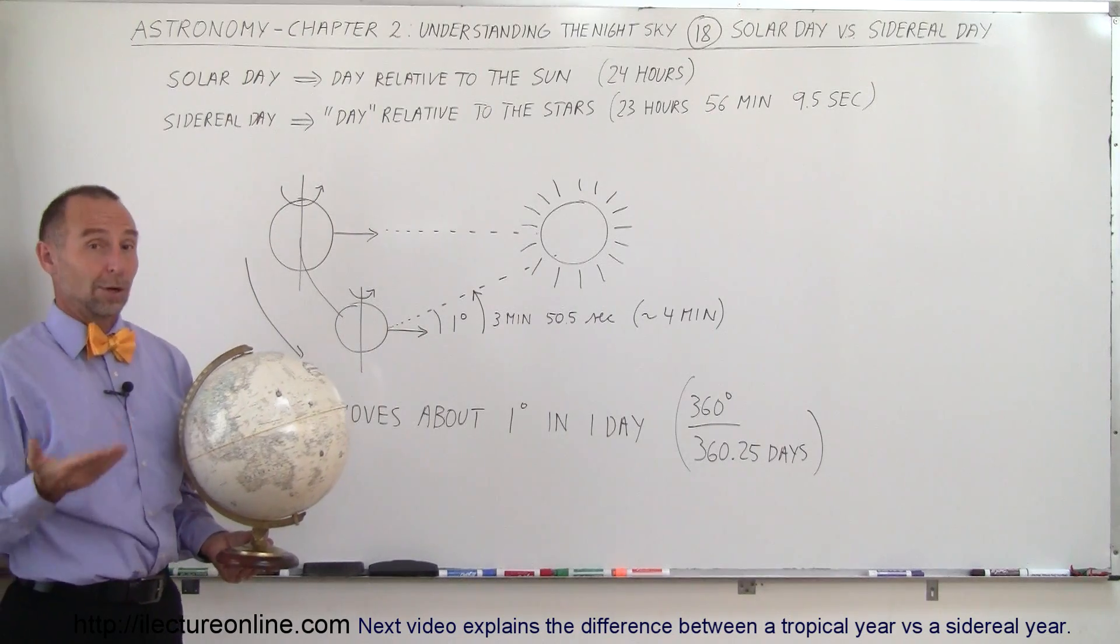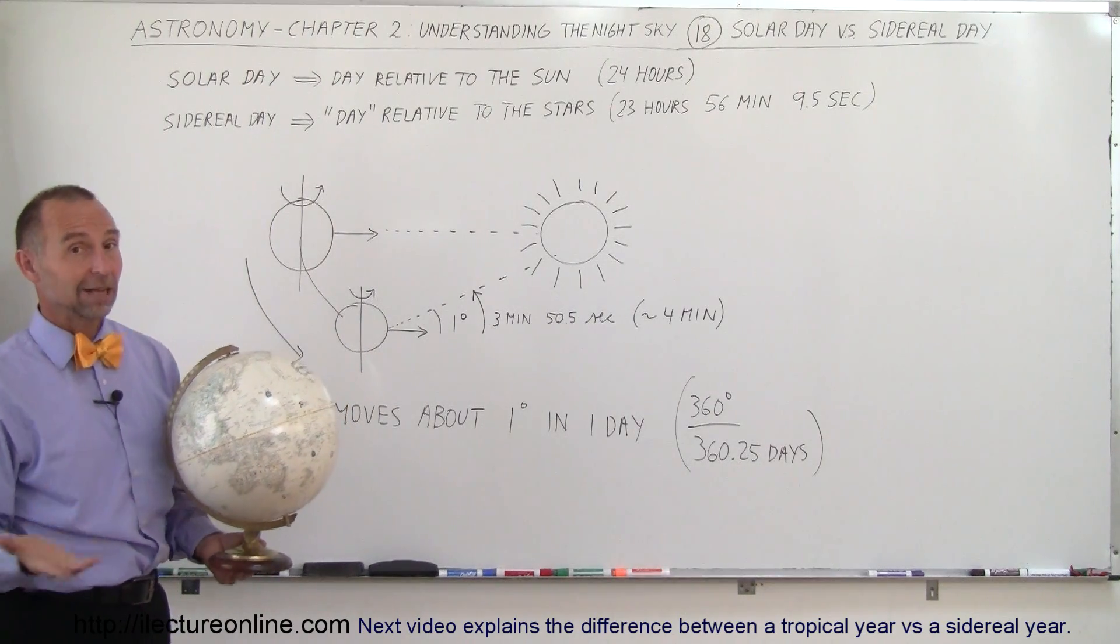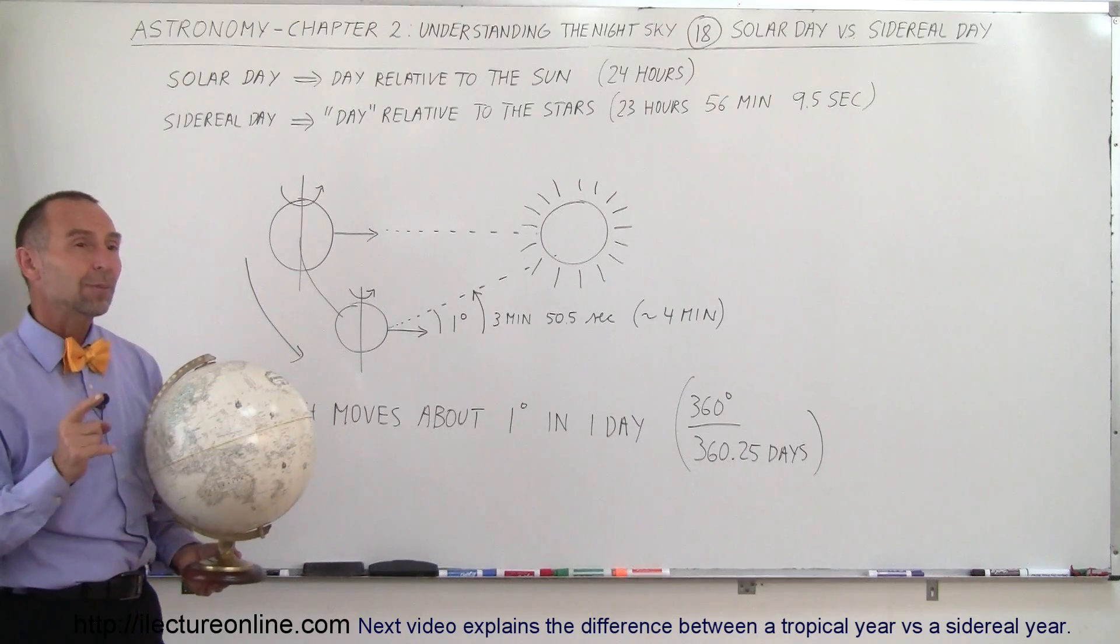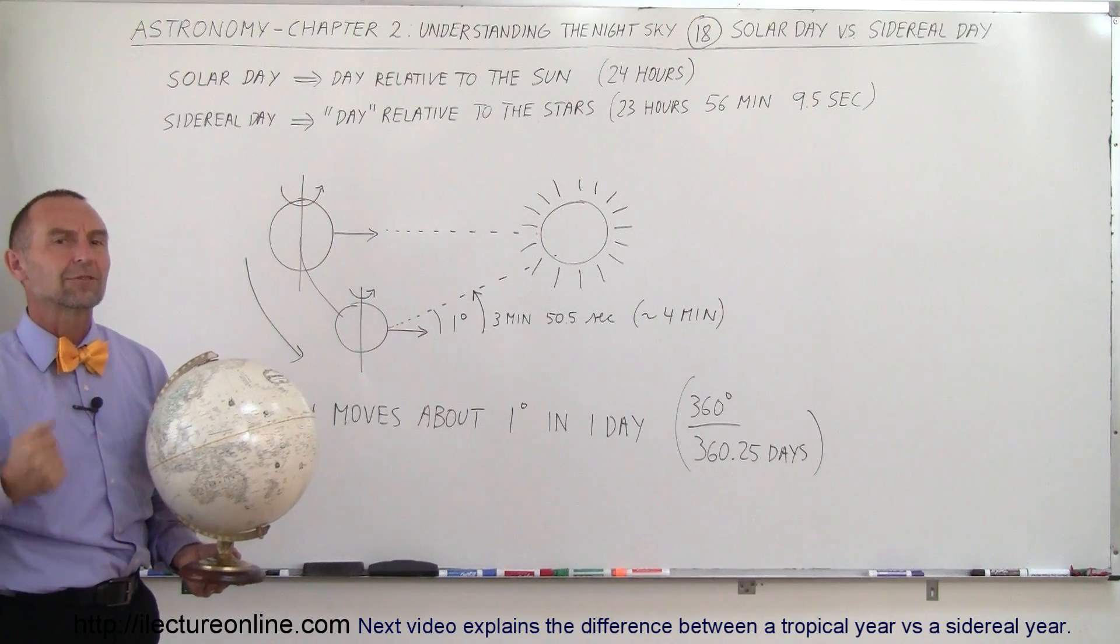So why aren't our days exactly 23 hours, 56 minutes, and 9.5 seconds? That's because we want to live in days that are relative to the Sun.